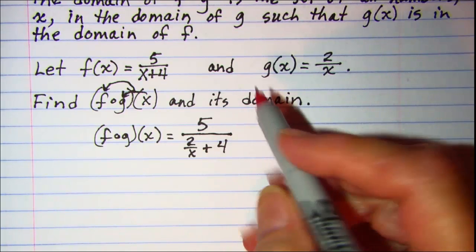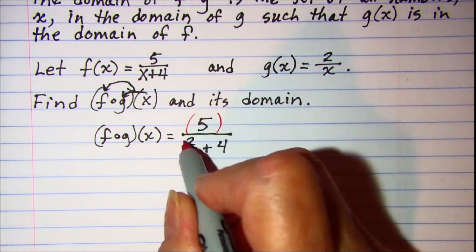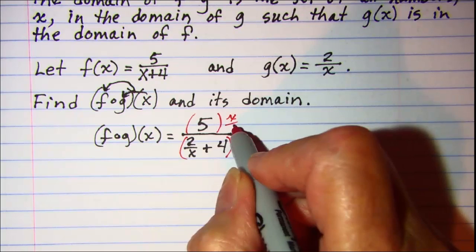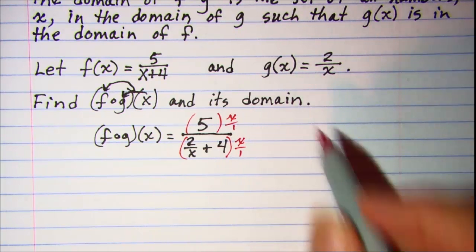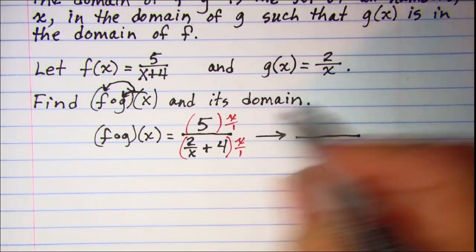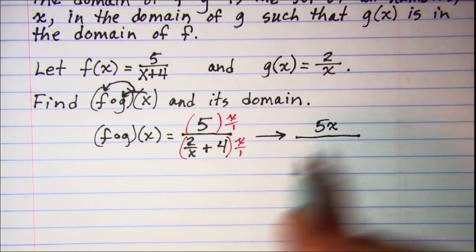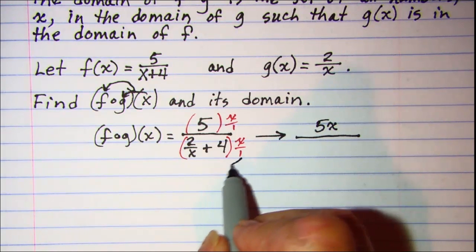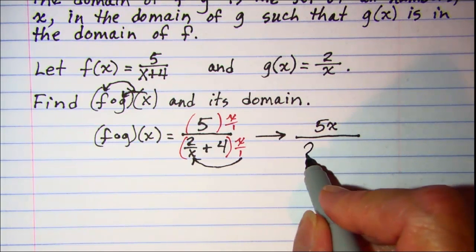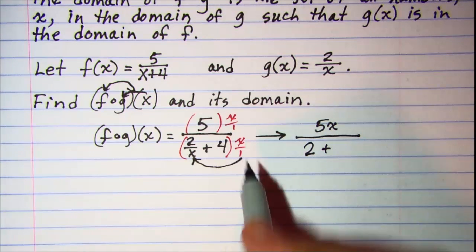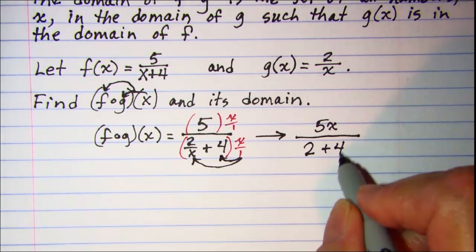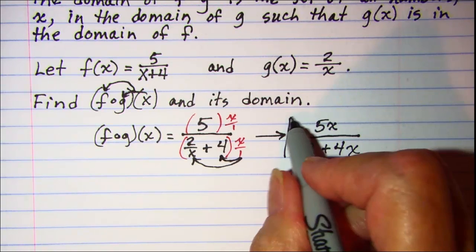Let's simplify this complex fraction. We can multiply the top and the bottom by x, so in the numerator I have 5x, and in the denominator when I distribute this first term my x will cancel and I'll have 2, and then when I distribute the x here I have 4x. This is my composite function.